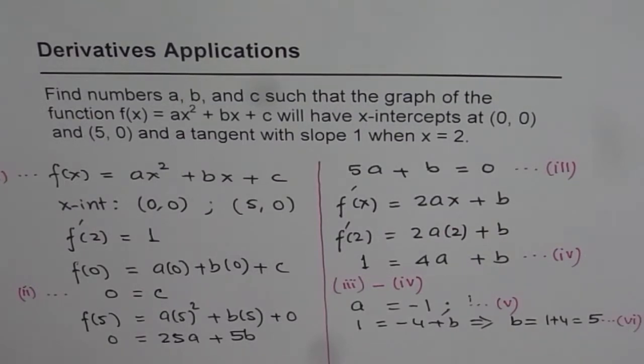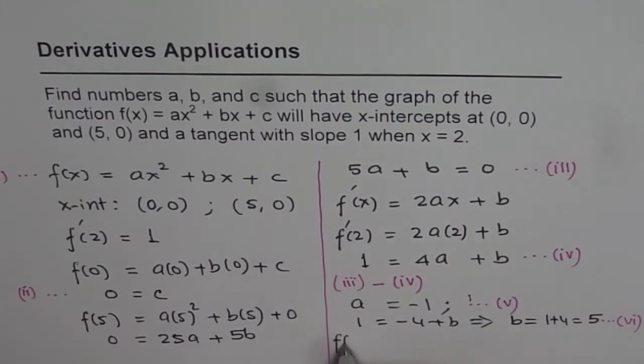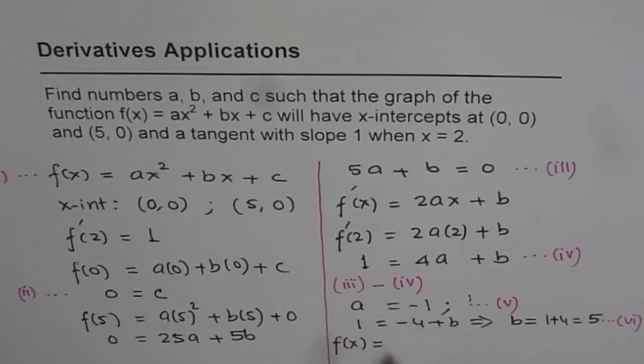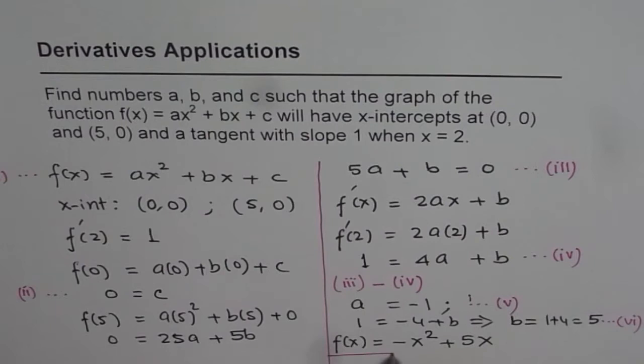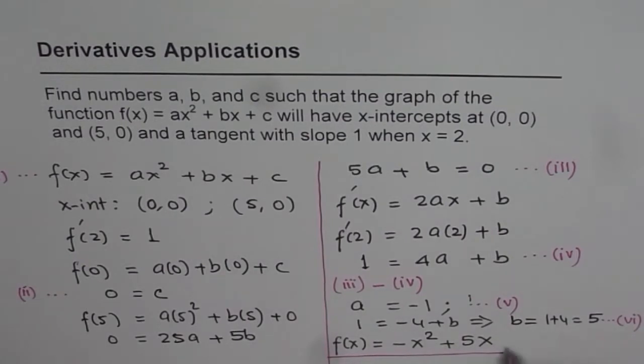So we have now values of a, b, and c, so we can write down our equation, which is f(x) equals, a is -1, so -x², b is 5 plus 5x. So that is our answer. That gives us the answer, and that really means that we found a = -1, and b = 5, and c = 0. So that is how we can solve this question.